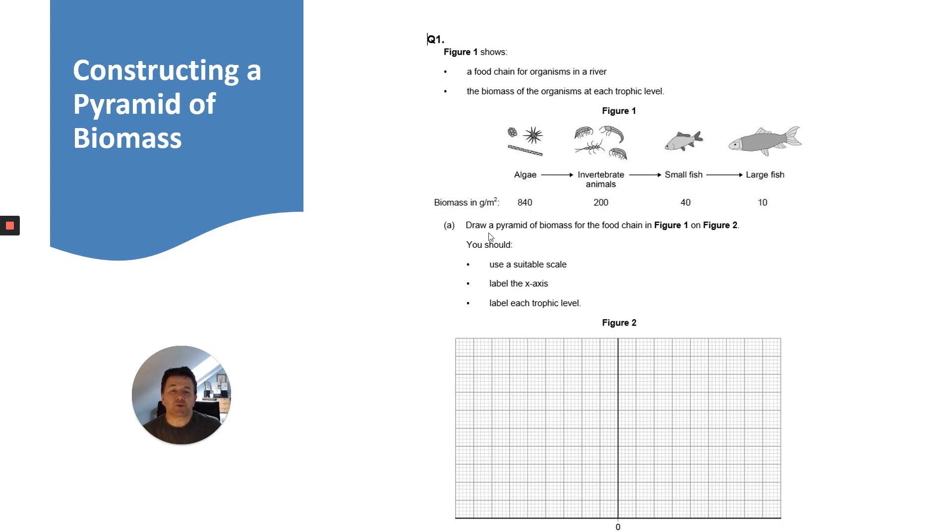The question says draw a pyramid of biomass for the food chain on this graph paper. You should use a suitable scale, label the x-axis, and label each trophic level.